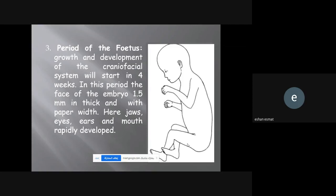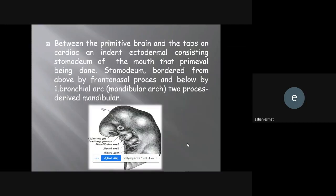The growth and development of the craniofacial system starts in the fourth week. In this period, the face of the embryo, 1.5 millimeters in thickness and width, develops rapidly. The jaws, eyes, ears, and mouth rapidly develop. Between the primitive brain and the heart, we have what we'll talk about now.